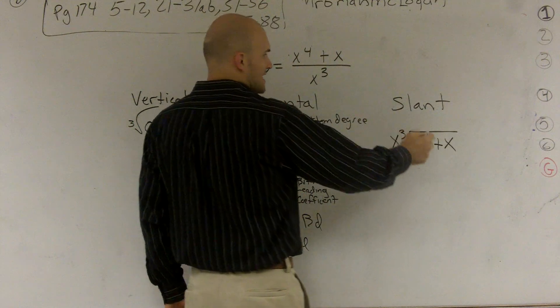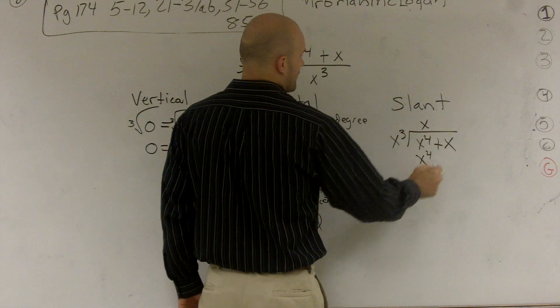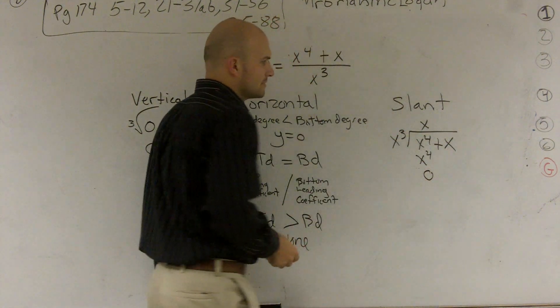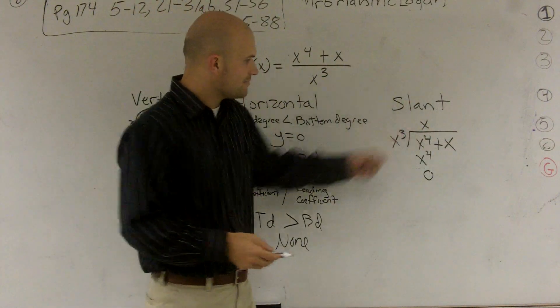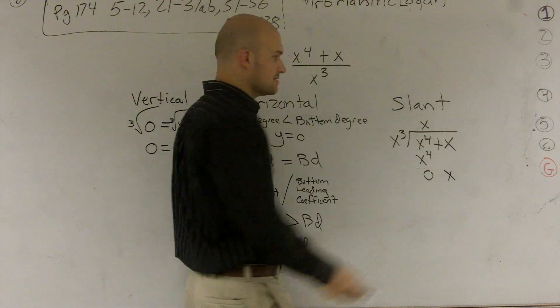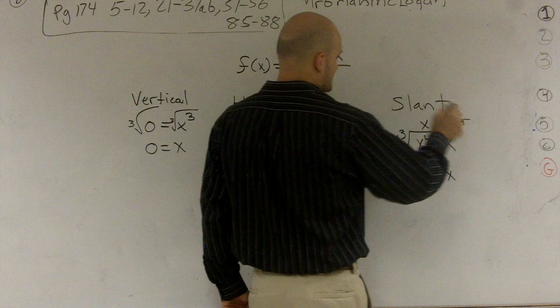So x to the third goes into x to the fourth x times. x times x to the third is x to the fourth. I subtract those, and I get 0, all right? Now, I bring down my x. x to the third cannot go into x, so I'm left with that as my remainder as x over x to the third.